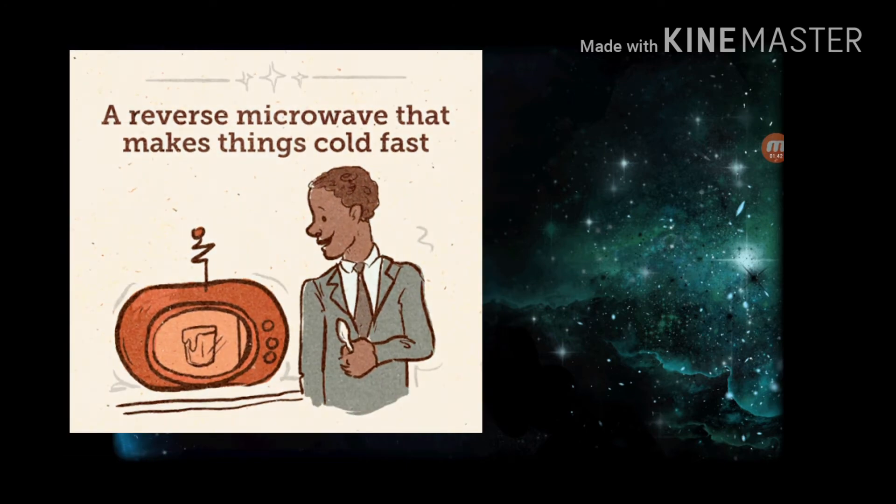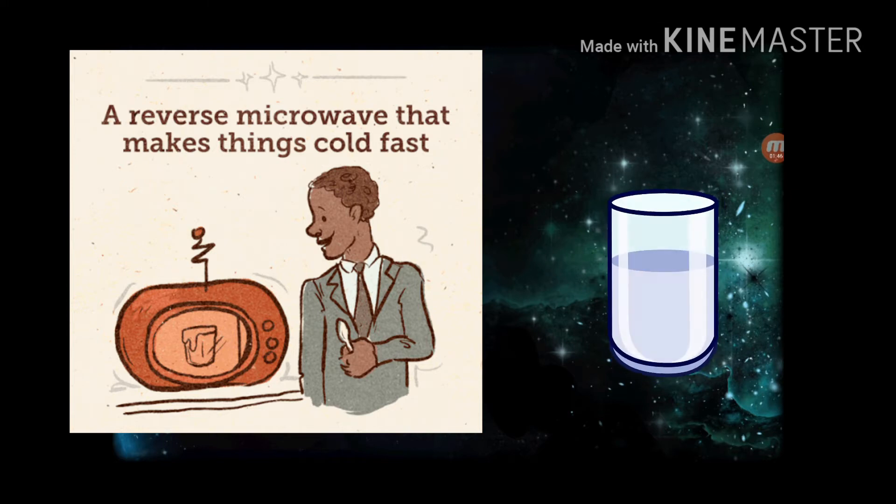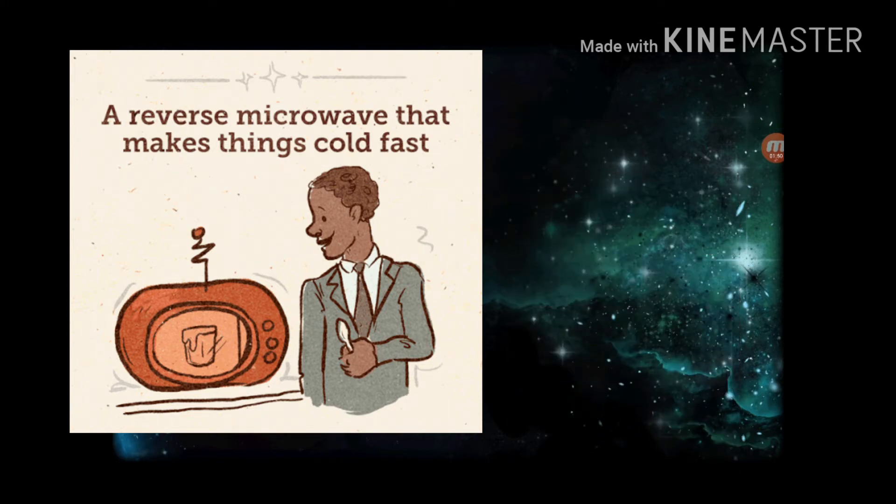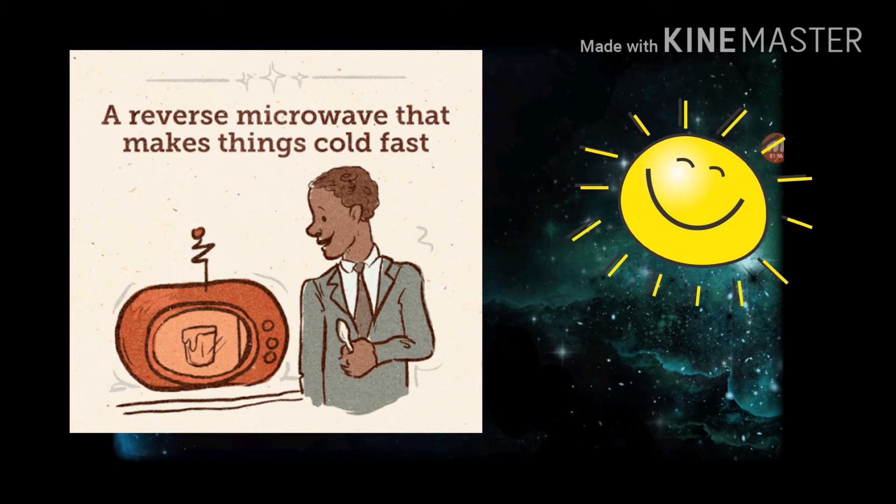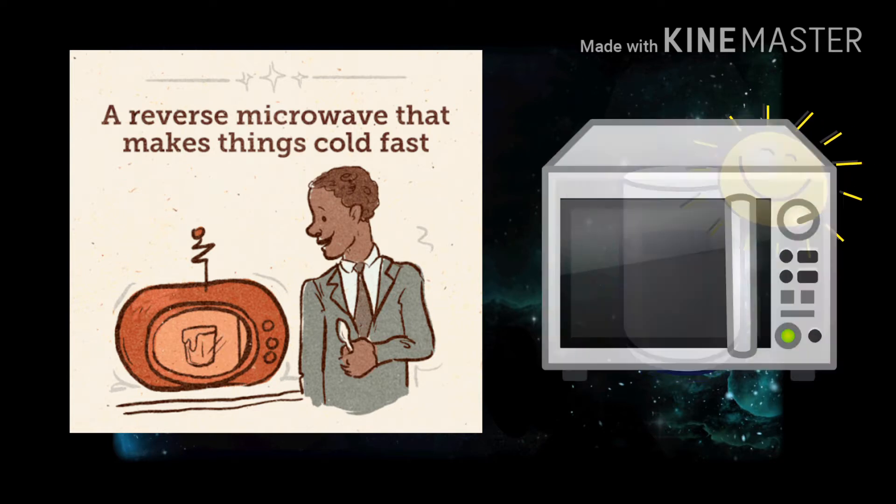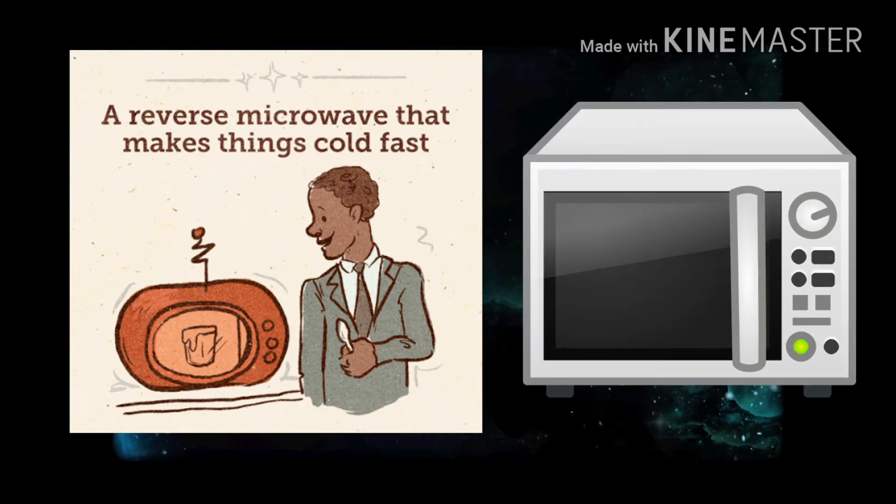This image shows a reverse microwave that makes things cold fast. That would help out a lot because if you've got a glass of water and put it in the fridge, the fridge would take at least an hour. If it's a sunny day and you want your drink cold fast, you could put it in the reverse microwave and it's going to do the job faster than a fridge.